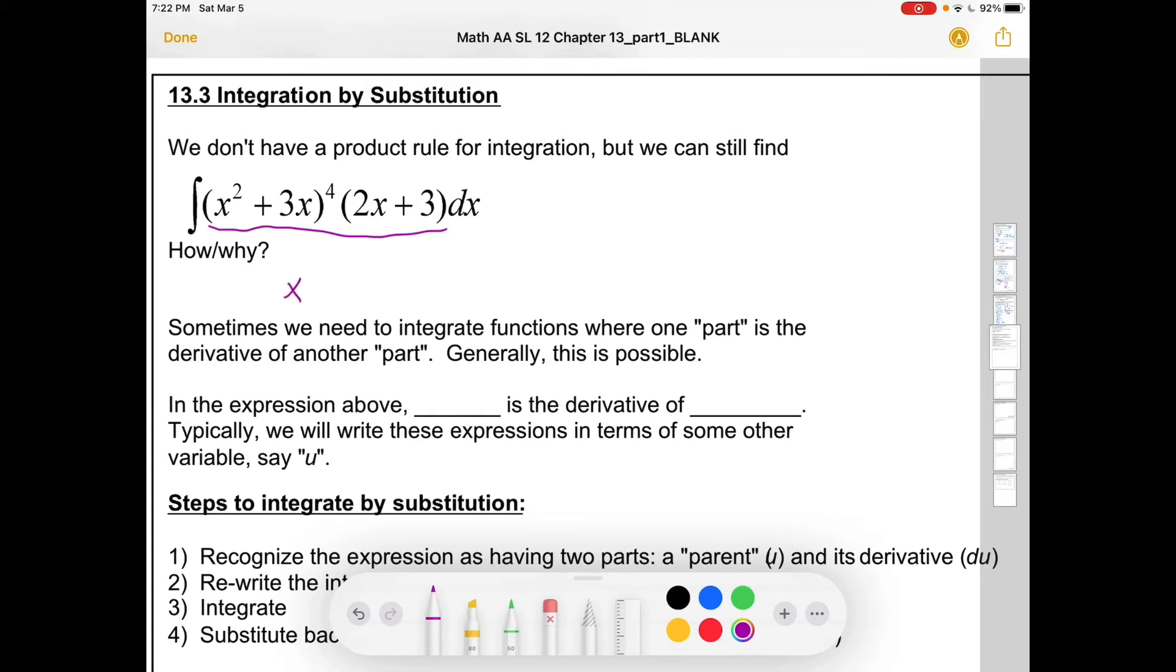So actually, if you guess that the integral is this plus c, then you'd be correct. The question is how? Like, how do we get that even if it looks more opaque or we're not able to guess something reasonable?